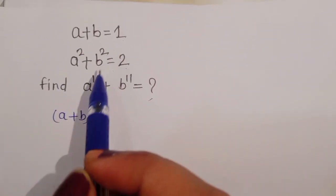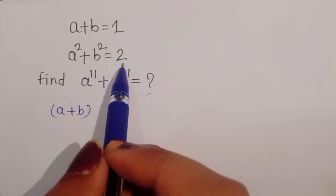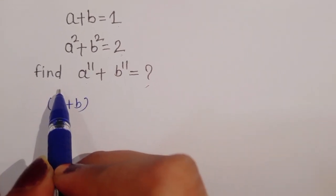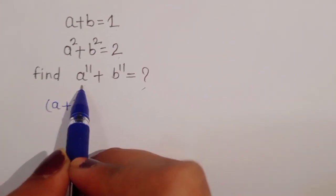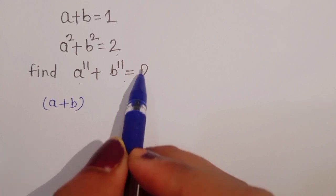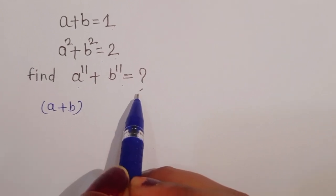a plus b is equal to 1, and a squared plus b squared is equal to 2. We have to find out the value of a power 11 plus b power 11.